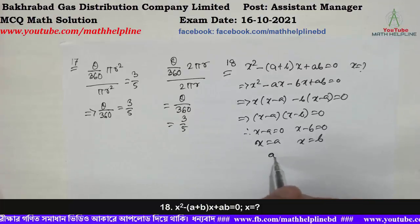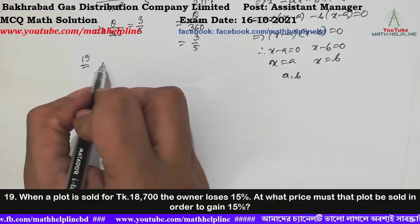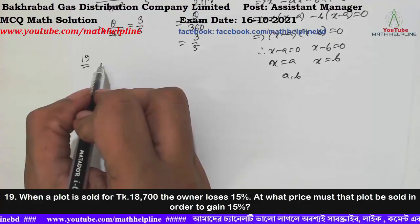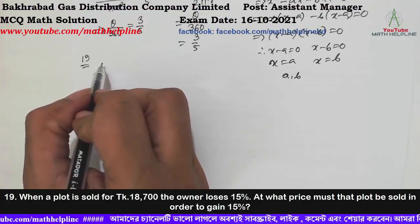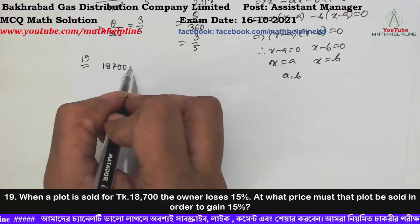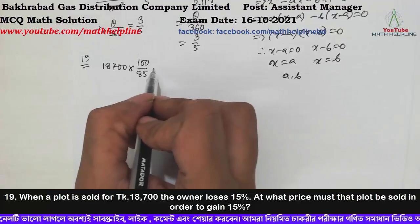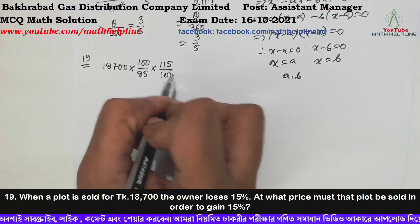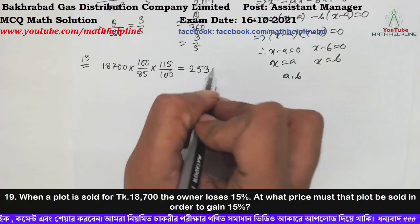The owner loses 15%. At what price must the plot be sold in order to gain 15%? With a 15% loss, 85% equals the main price. Divided by 85 into 100, and for 15% gain multiply into 115 divided by 100 — the answer comes to 25,300 taka.